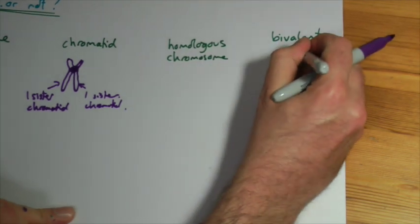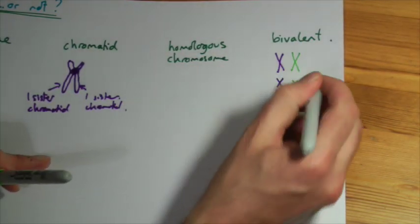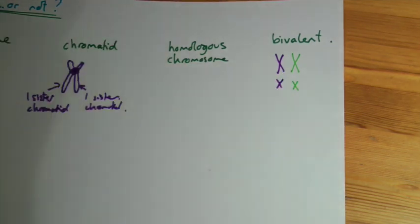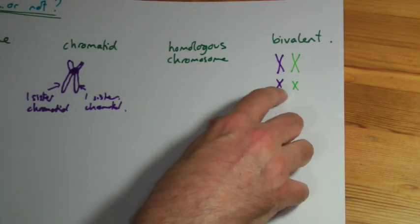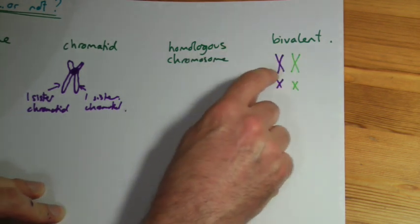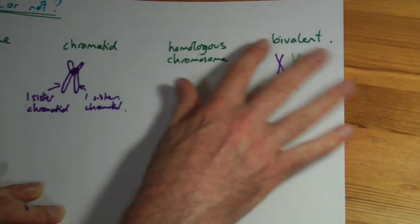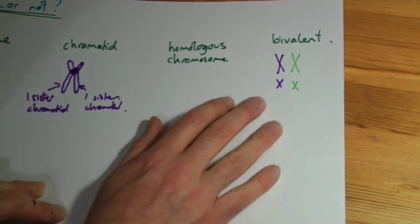I'll just draw it very simply. There's one homologous pair, there's another homologous pair, and they line up next to each other. And this is when chiasma formation occurs, the crossing over. So bivalent is the pair of homologous chromosomes lined up together. Just prior to crossing over and while crossing over is happening.